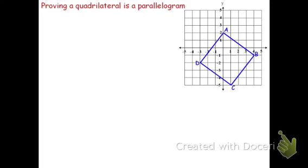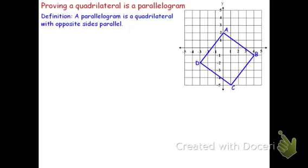In this video, we'll look at how to prove if a quadrilateral is a parallelogram. To begin, let's review the definition of a parallelogram. A parallelogram is a quadrilateral with opposite sides parallel. Sometimes you'll see that a parallelogram is a quadrilateral with two pairs of parallel sides — it's really the same thing, because two pairs of parallel sides means the opposite sides have to be parallel.